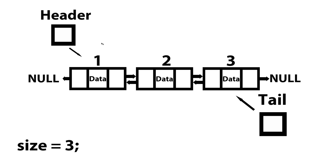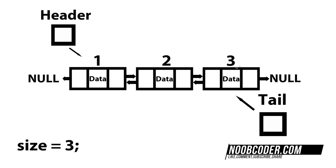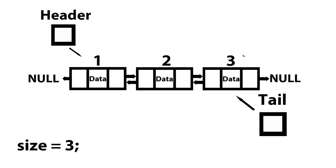Likewise, if the position that we want to insert a node is greater than size plus one, then it's also an invalid position. For instance, if I want to insert at position five, well, the last node within our list is position three. So in order to insert at position five, I would have to create a dummy node, which I don't want to do. That's why we check size plus one — because using the append method, we already have a pointer to position three via the tail, so we can insert at position four easily.